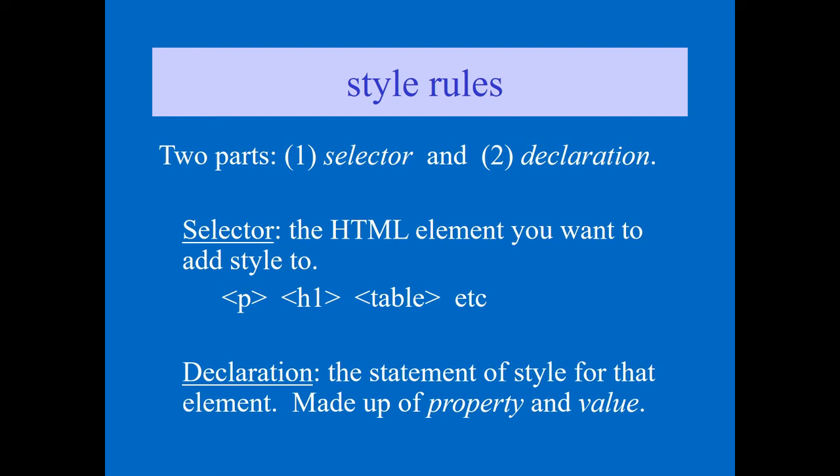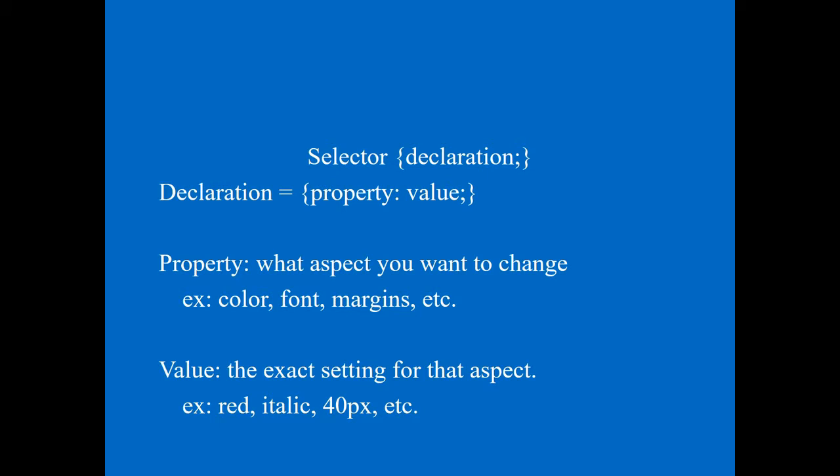Inside the declaration we apply the property and value. So the structure is: selector, then declaration, and inside the declaration, property and value. Property means what aspect you want to change — for example, background-color, color, font-size, font-family, font-weight — these are all different properties.